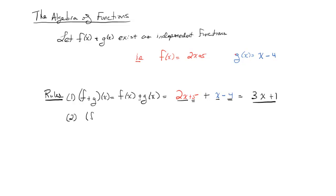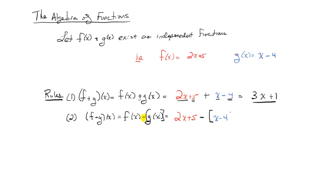Our next rule is subtraction. We denote that as (f minus g) of x, which by definition equals f of x minus g of x. We plug in 2x plus 5 and then subtract the second function. I'm going to put the second function in a separate set of parentheses, because whenever I see a subtraction I have to worry about distribution — the negative sign has to be distributed to both terms of x minus 4.